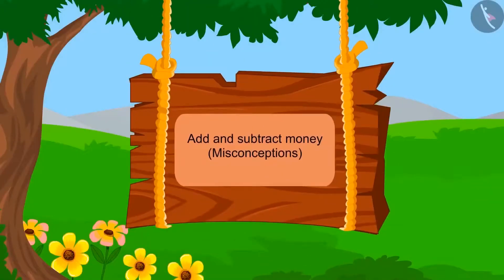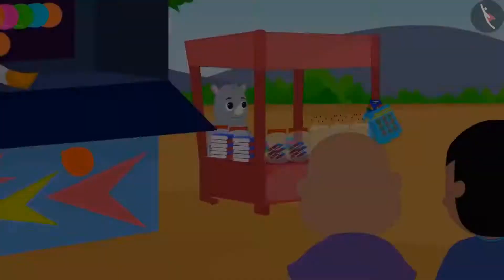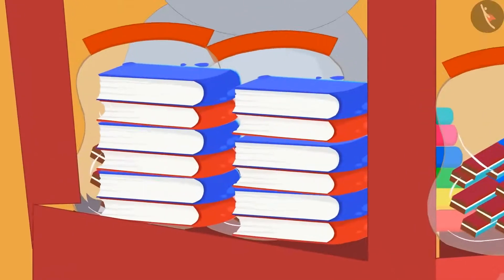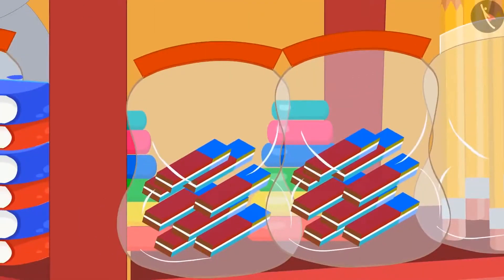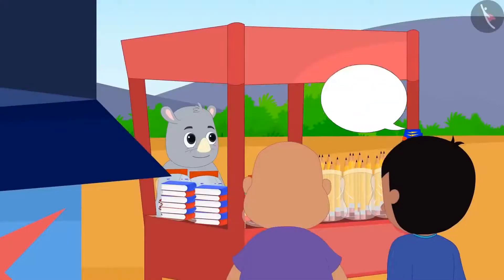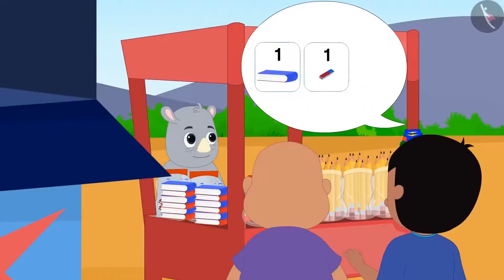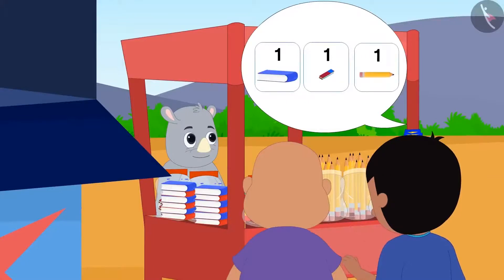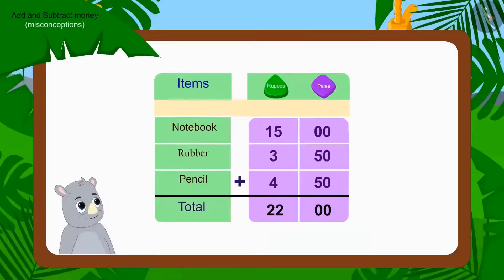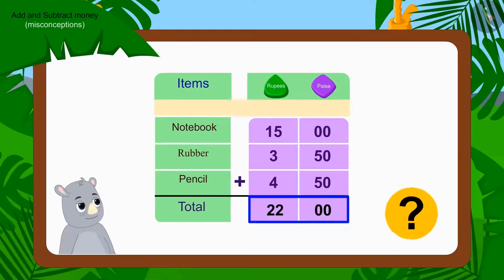In this video, we will look at some common mistakes related to adding and subtracting money. Raju and Bablu have come to Gaggu's shop to buy notebooks, pencils and some other items. Raju asked Gaggu for one notebook, one rubber and one pencil. Gaggu added the value of all three items. Children, tell me if Gaggu's addition is correct.